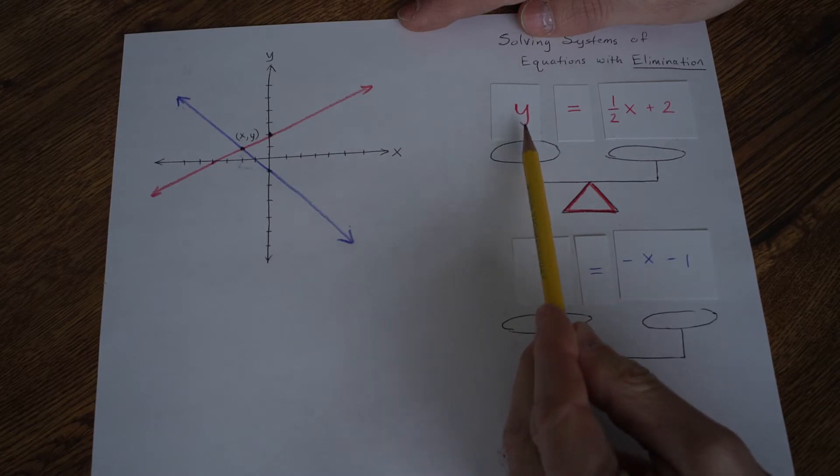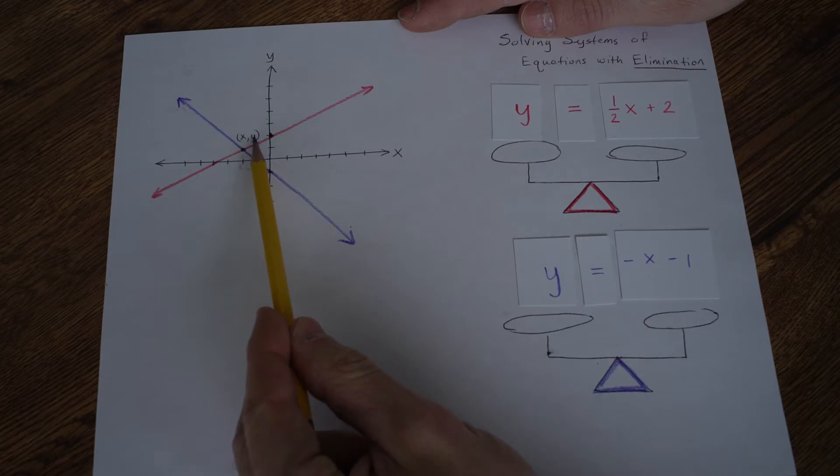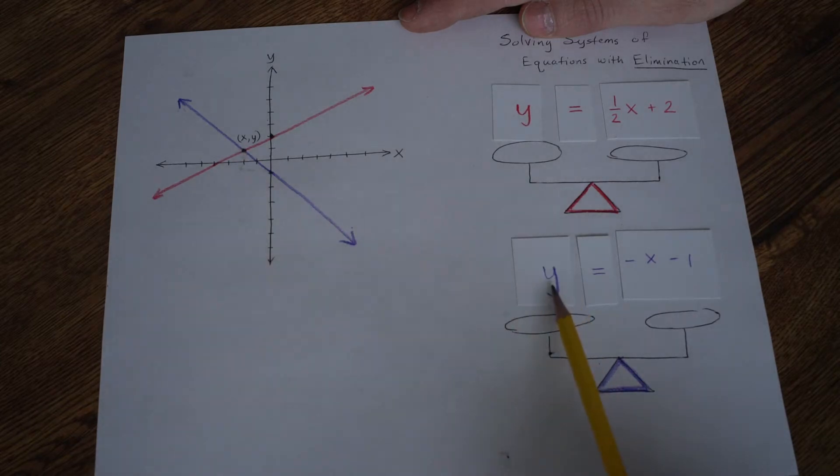That value right there, that's a height of 1. That means the red y is a height of 1 and the purple y is a height of 1. Would you agree?